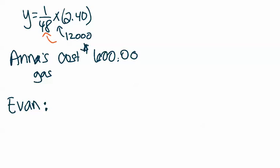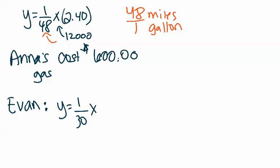Okay, if I were to flip that over, I would end up with 48 over 1. And remember our units were miles per gallon. So if this is telling me that Evan's miles per gallon are 30, as I think about my equation, I'm going to have y equals 1 over 30, because x is miles per gallon, x times the number of miles. So that's going to represent the number of gallons that Evan is using.